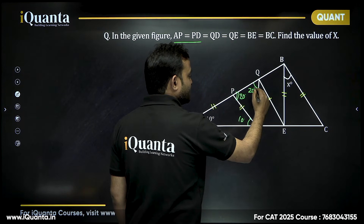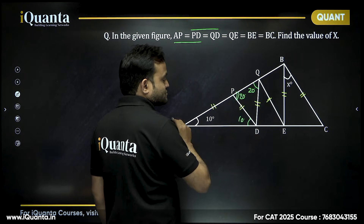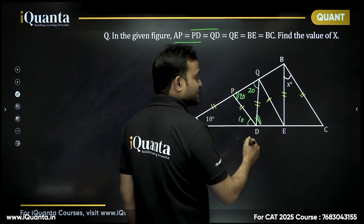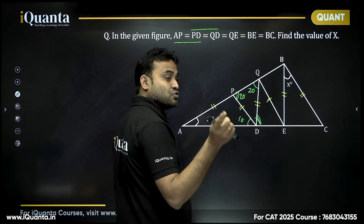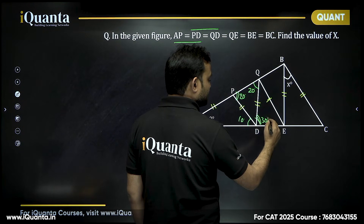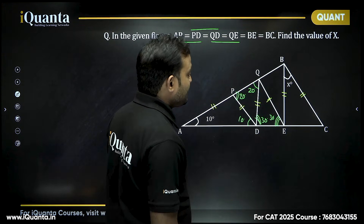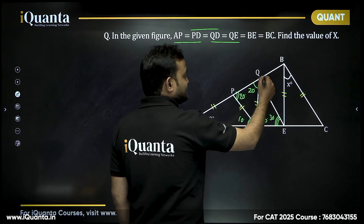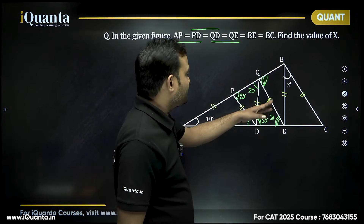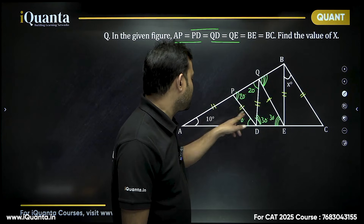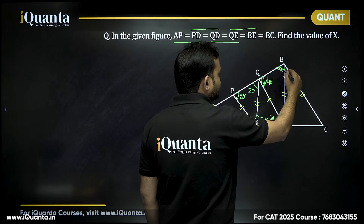Since PD = QD, this angle is also 20 degrees. In triangle ADQ, the exterior angle at D equals the sum of the two opposite interior angles: 20 + 10 = 30 degrees. Since QD = QE, the opposite angle is also 30 degrees. In triangle AQE, the exterior angle BQE equals 30 + 10 = 40 degrees. Since QE = BE, this angle is also 40 degrees.